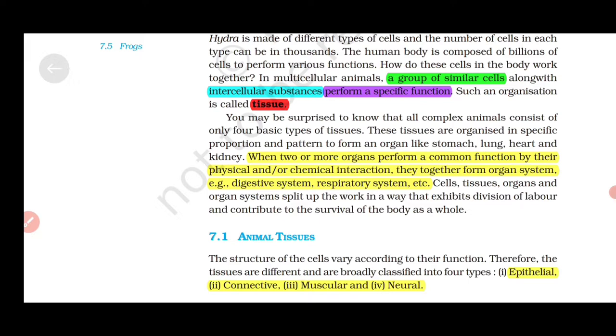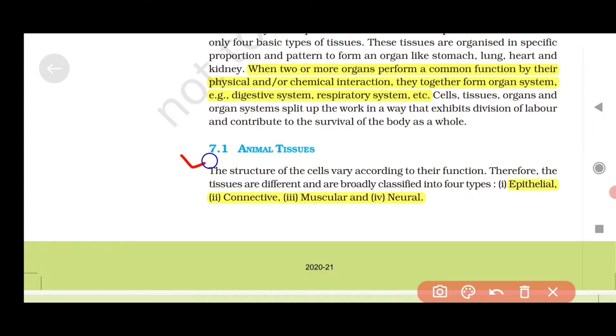When two or more organs perform a common function by their physical and chemical interaction, they together form an organ system, such as the digestive system and respiratory system.